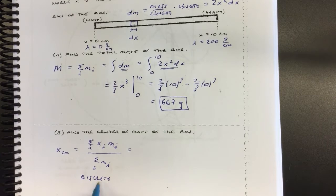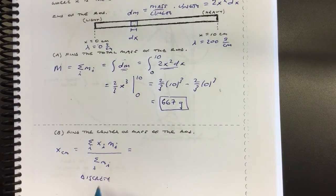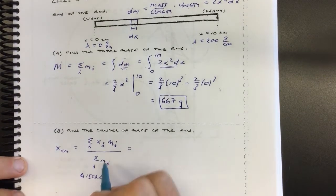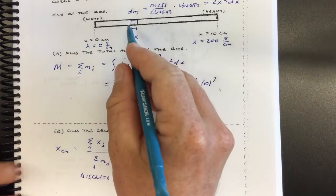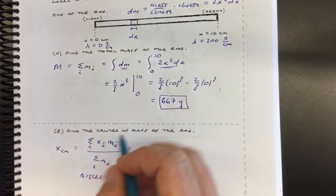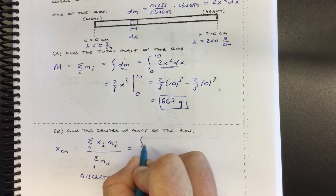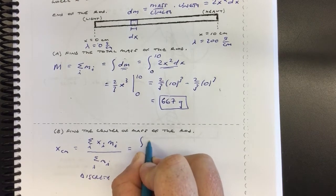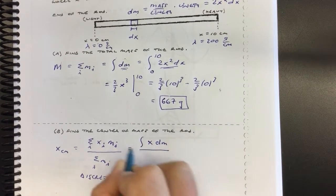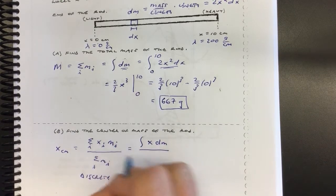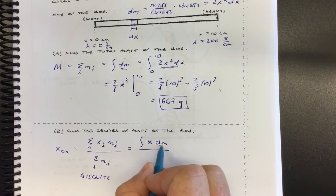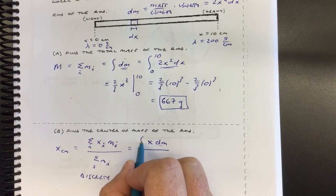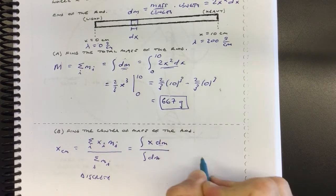That formula is for discrete objects — discrete meaning it comes in individual chunks, not discrete like 'keep it on the down low.' But we don't have a discrete distribution here; we have a continuous one. So rather than a finite number of bits, we have an infinite number. These sums need to become integrals. Instead of a sum over i of x sub i times m sub i, we have the integral of x dm. You're taking each little bit of mass, multiplying by its position, and adding them all up. The denominator is just the sum of all the little bits of mass.